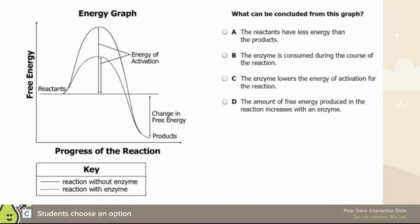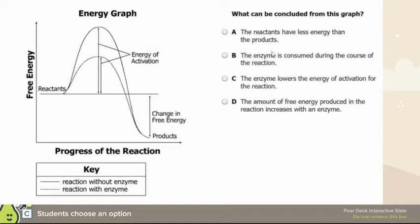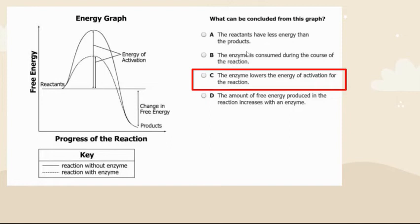For the energy graph question, using process of elimination: reactants actually have more energy than products, so 'reactants have less energy' is false. Enzymes are not consumed during a reaction — that's not true. The enzyme lowers the activation energy for the reaction — that is true and is answer C. The amount of free energy produced does not increase with an enzyme. Reactants always have more energy than products, like before you run a race you have more energy than afterward.